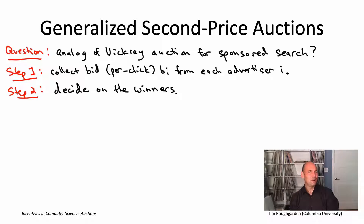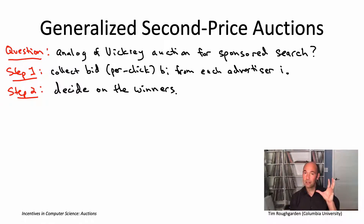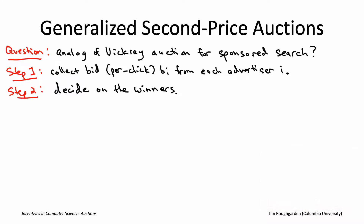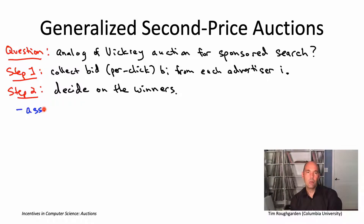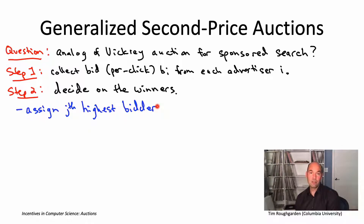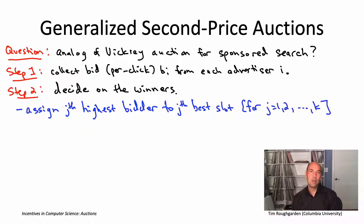The highest bidder is taken care of — they get the best slot. Who should get the second best slot? It feels like it should be the second highest bidder. And that's correct. That's exactly what we're going to be doing, and it's exactly what's done in practice in what's known as a generalized second price, or GSP, auction. In general, we're considering auctions where the Jth highest bidder gets assigned to the Jth best slot — the slot with the Jth highest click-through rate, alpha sub J. There may be more advertisers than slots, in which case if you're not among the top K bidders, you get nothing and aren't displayed at all.